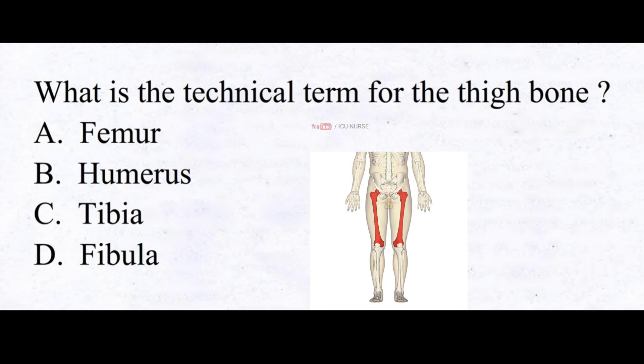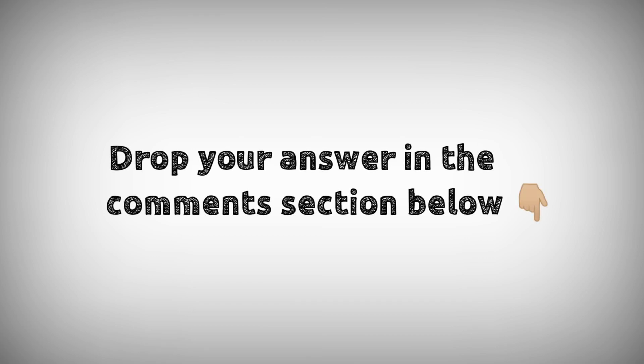What is the technical term for the thigh bone? A. Femur, B. Humerus, C. Tibia, D. Fibula. And the correct answer — drop your answers in the comment section below.